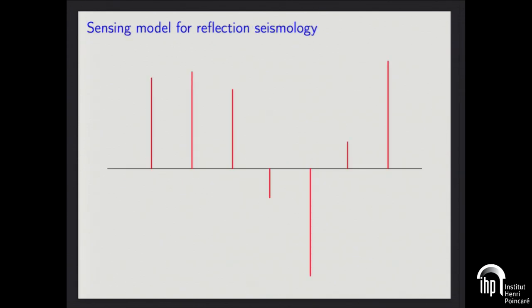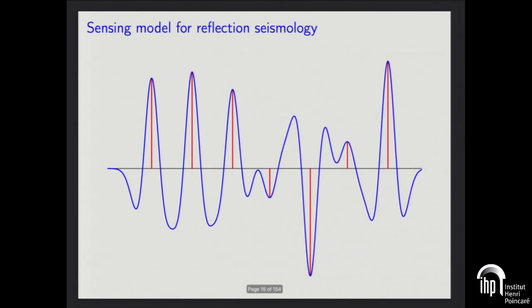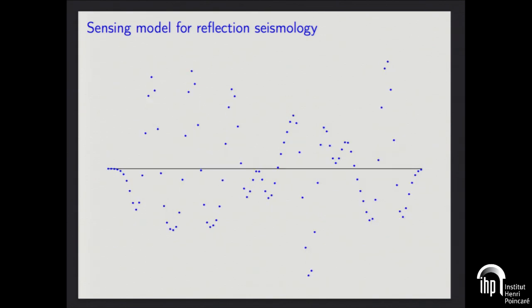Let's look at the mathematical model we're going to analyze. We have some spikes supported continuously in some interval. We send this pulse down and what we get back is the convolution of the pulse with the spikes, but we sample — so we only get to see some points, maybe not uniformly. Our goal is going to be estimating those spikes from data like this.